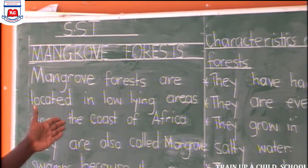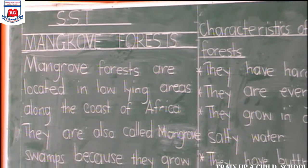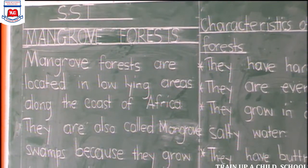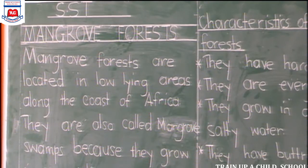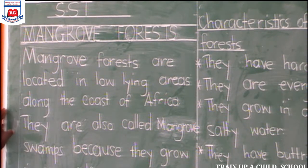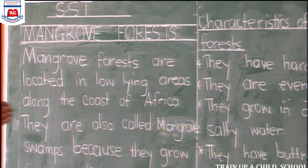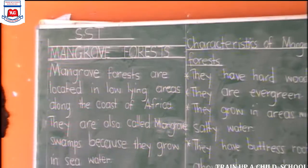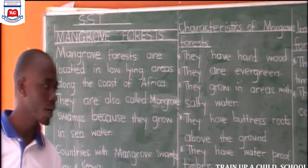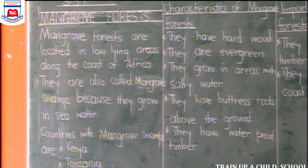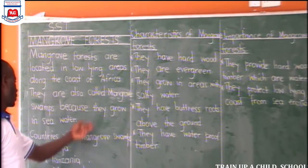Mangrove forests are located in low-lying areas along the coast of Africa — the coast of West Africa and the coast of East Africa. Mangrove swamps or mangrove forests grow well in salty waters. Mangrove forests are also called mangrove swamps because they grow in sea water.